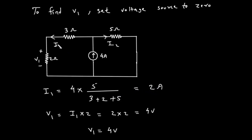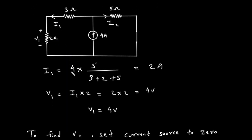Now that we have the current I1 flowing through the 2 ohm resistor, we can find the voltage V1 across it using Ohm's law, which is voltage equals current times resistance. So V1 equals I1 times 2 ohms. V1 equals 2 amperes times 2 ohms, which gives us 4 volts.